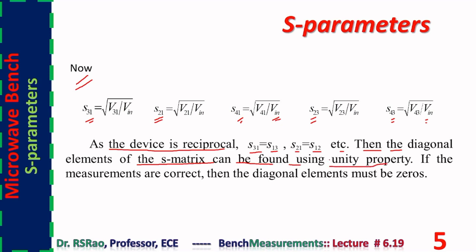The diagonal elements of the S-matrix can be found using the unitary property. If the measurements are correct, then diagonal elements must be zeros. Under no circumstances can the S-matrix obtained by measurement be exactly the same as the S-matrix obtained through analytical means — there always exists some difference. If measurements are done carefully with utmost attentiveness, then the difference between the measured and calculated values is less; otherwise it is more.